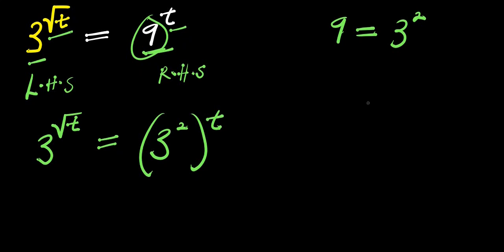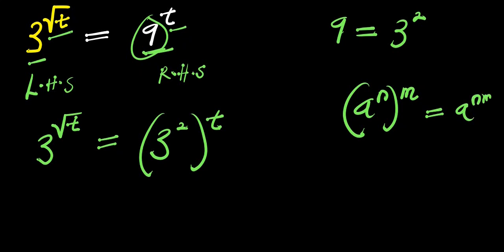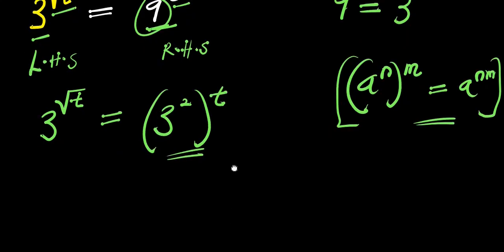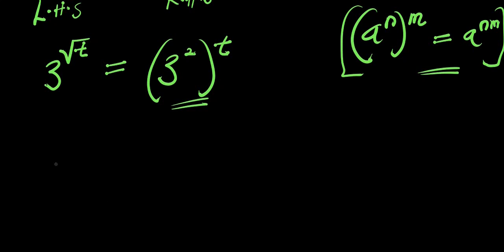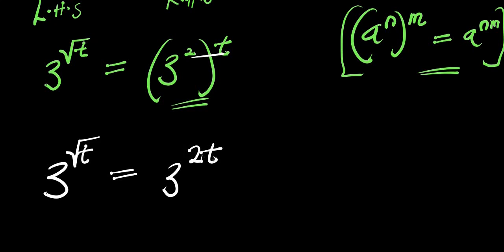Now consider this identity: you have a raised to the power of n, and this is raised to the power of m. This equals a to the power of n times m. Applying this identity here, what I'm going to have will be 3 to the power of the square root of t equals 3 to the power of 2 times t, that is 2t.